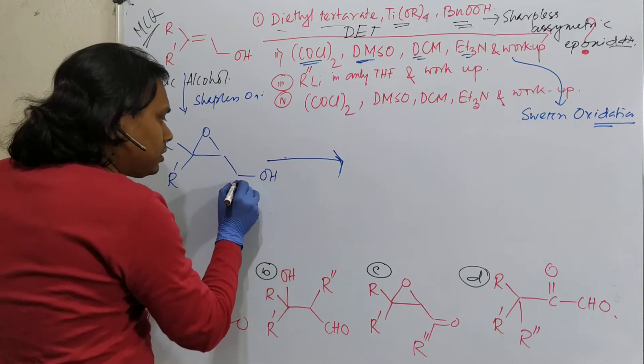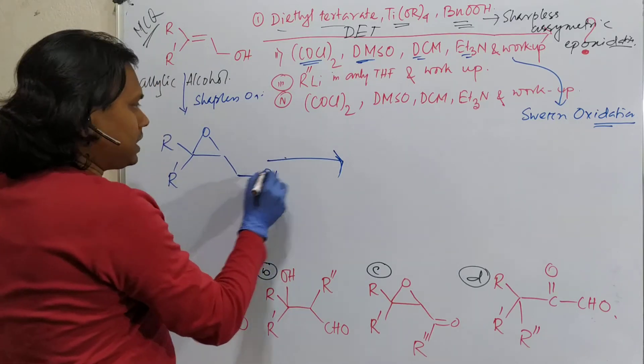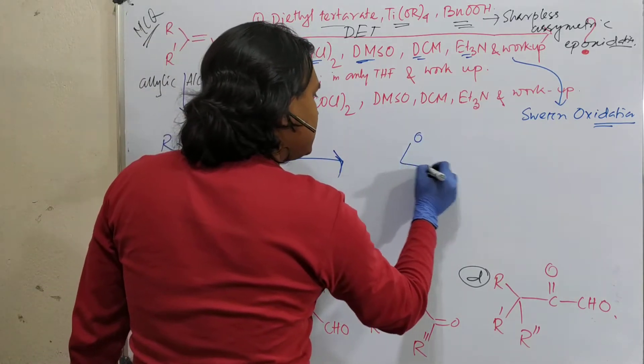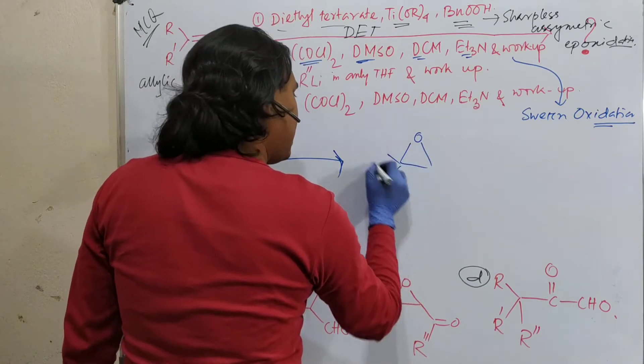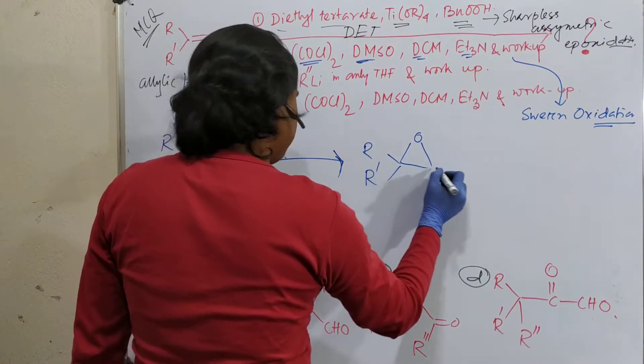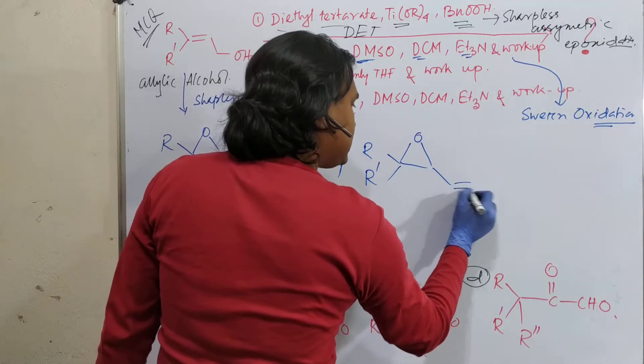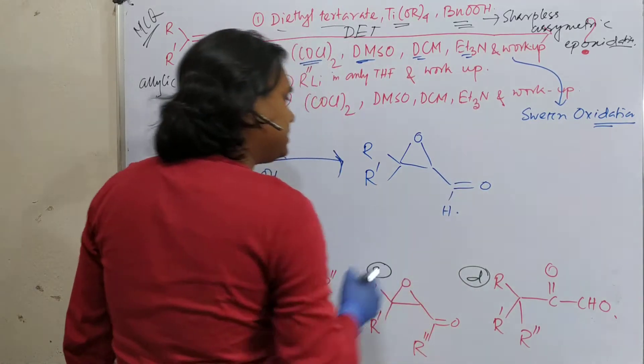So actually, this part will be oxidized. So what will it result? This epoxide R, R prime. This is double bond O. This is aldehyde.